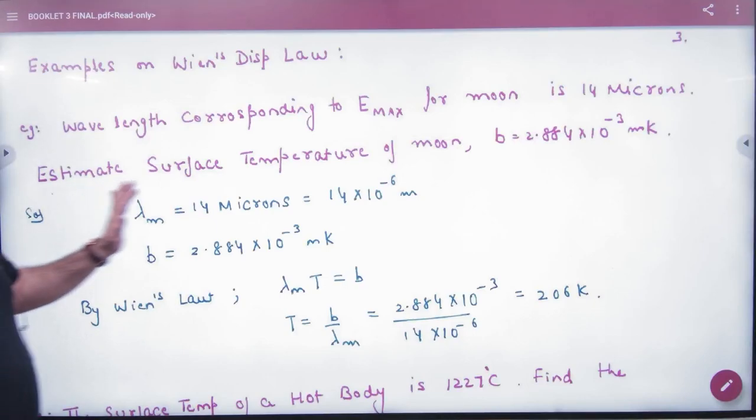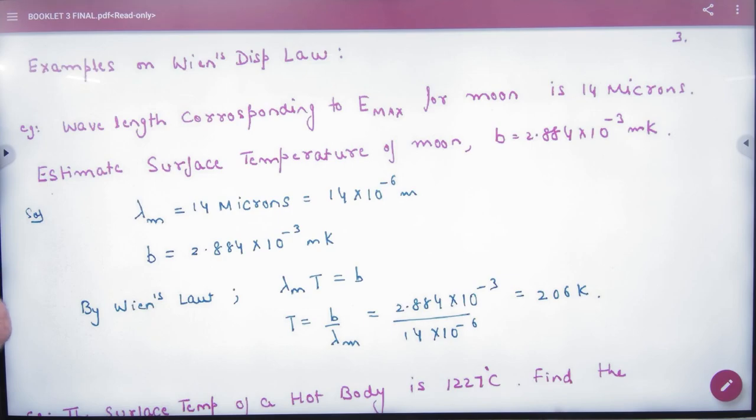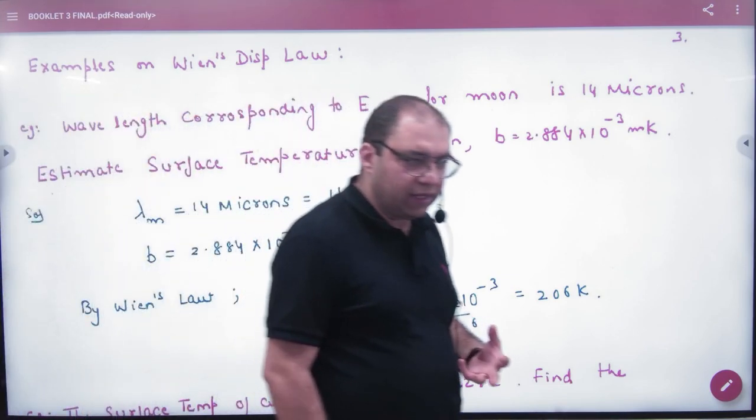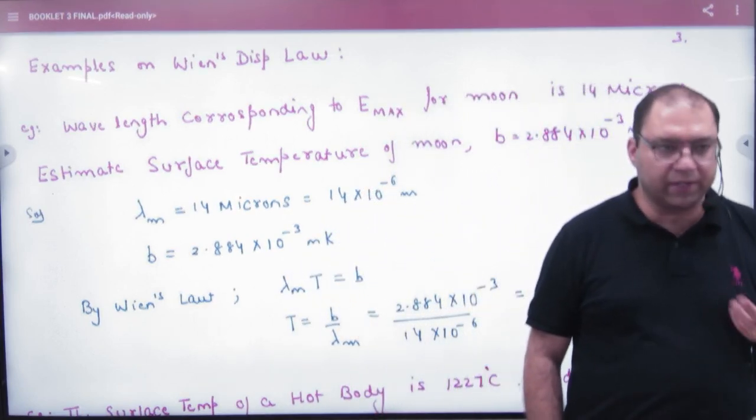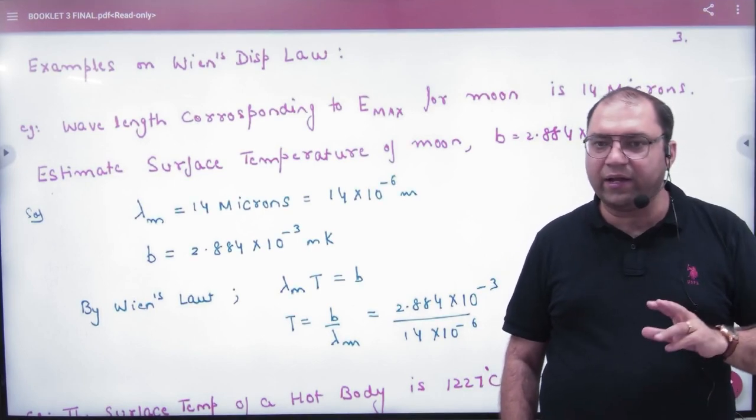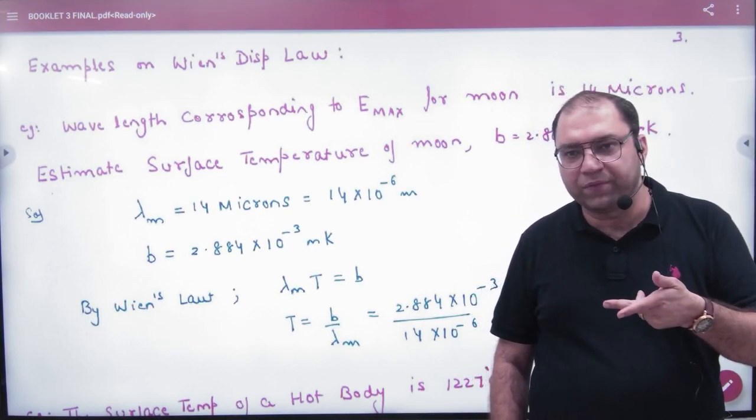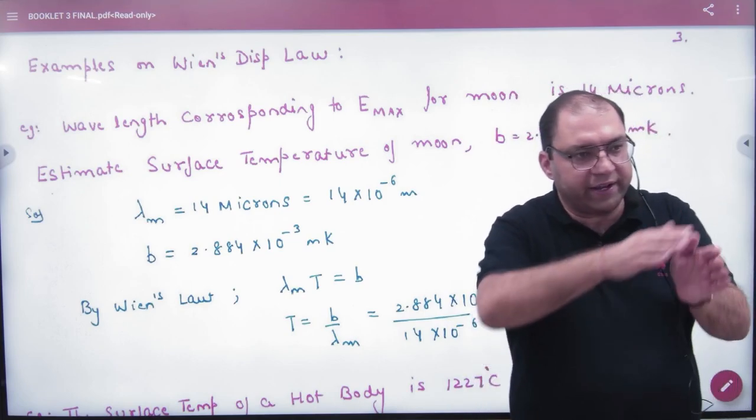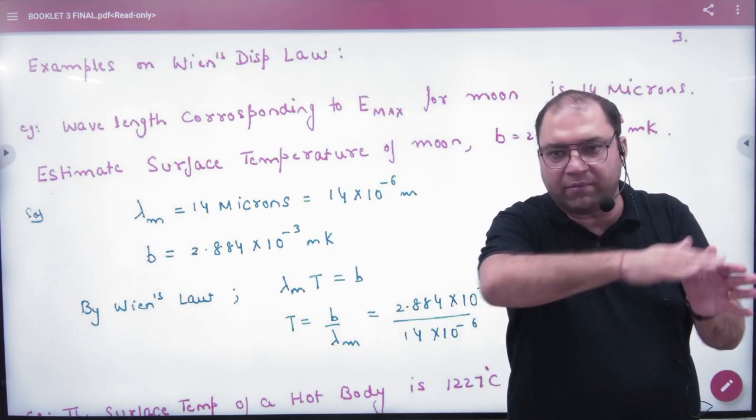The first numerical: wavelength corresponding to e-max for moon is given. That means moon is emitting from its own light. The sun is taking light from the sun, and its temperature is T. Now it is emitting energy. It's a hot body.